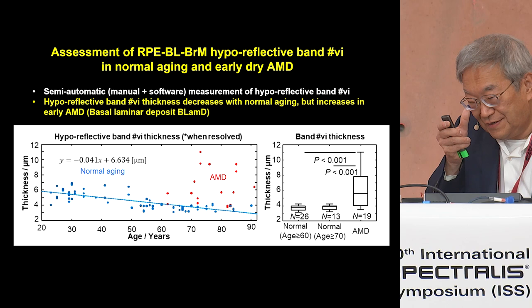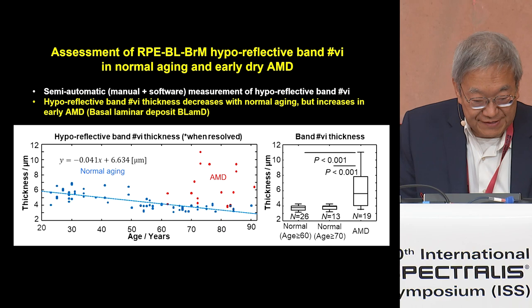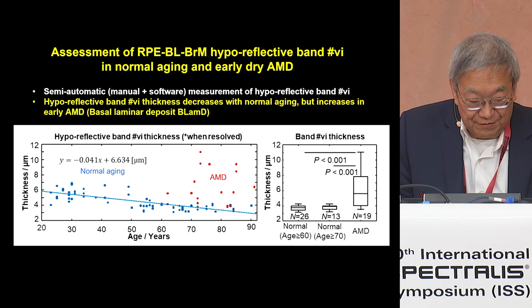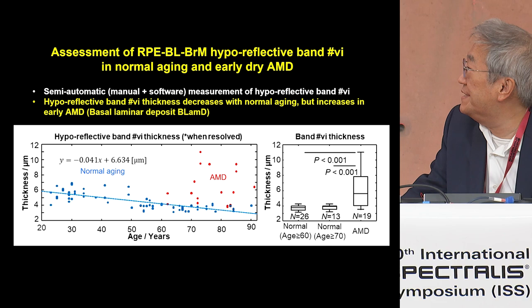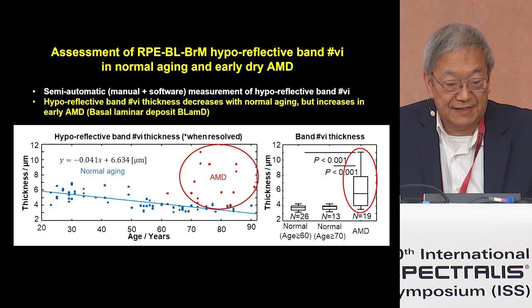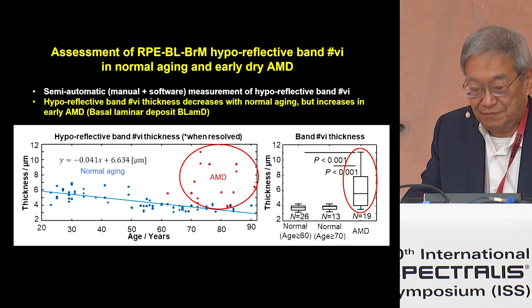We can use a combination of human reading and quantitative software to measure the thickness of this feature. This is on the micron scale — on the order of six microns down to two to four micron thicknesses. We see a decreasing thickness with aging, but in early AMD this feature appears and is thicker. This is a potential marker, we believe, for AMD.